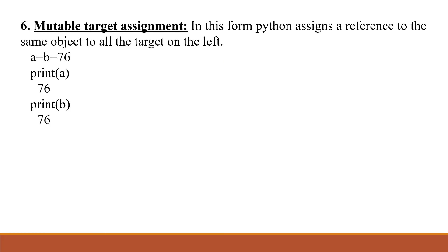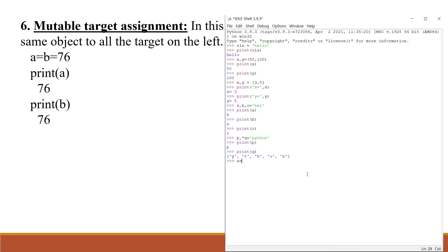Next, multiple target assignment. In this form, Python assigns a reference to the same object to all the targets on the left. For example, if we take a = b = 76, print a gives the result as 76, and print b gives the same result as 76 — meaning the value of a and b is the same.